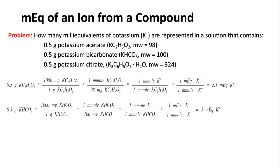For potassium bicarbonate (KHCO₃, formula weight 100): start with 0.5 g, convert to mg, then to millimoles (÷100). Again 1 K per molecule, so 1 mmol K per 1 mmol KHCO₃. Valence is 1, so 1 MEQ per mmol. Result: 5 milliequivalents — nearly the same as potassium acetate, with the small difference due to slightly different formula weights.